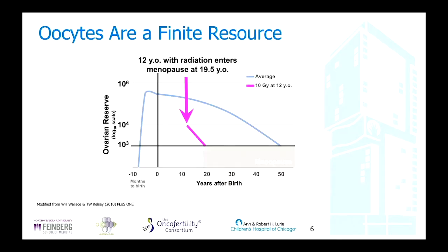Oocytes are a finite resource — baby girls are born with the most oocytes they will ever have, and over our lifespan those just atresia or go through menstrual cycles once puberty begins. We have this huge primordial reserve on a 10-to-the-6 logarithmic scale that decreases to the 10-to-the-3 level that triggers menopause. A young pediatric patient undergoing high-risk treatments could expect to go through menopause early — that is the definition of premature ovarian insufficiency, potentially 20 years earlier than expected.